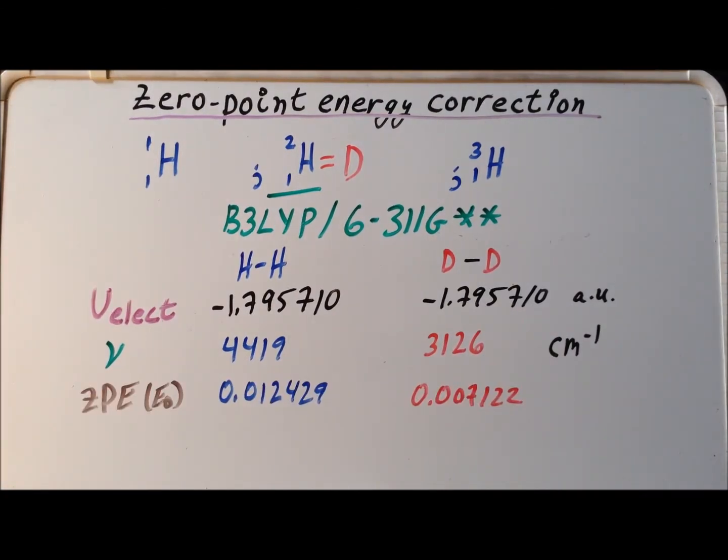One of the key results that's provided at the end of a frequency calculation is the value of this zero-point energy. And here again we see a massive difference between the value for hydrogen-hydrogen, 0.012 Hartrees, as opposed to the value for deuterium, which is 0.007122. So our prediction that the zero-point energy for deuterium was going to be less than for hydrogen turns out to be true.